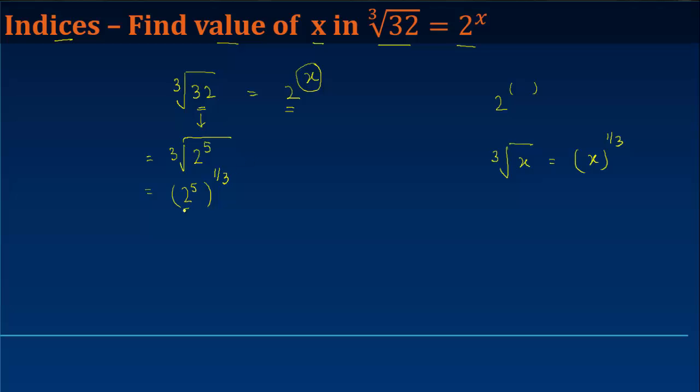Now, this becomes something like x to the power m, then the bracket close to the power n. And we know that the solution to this is x to the power mn.